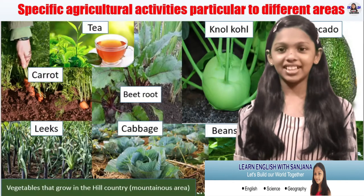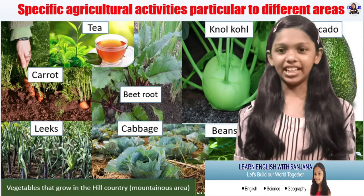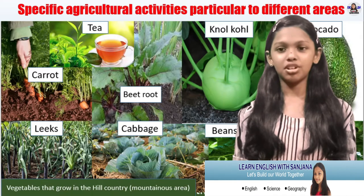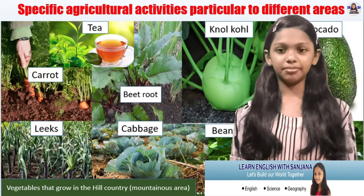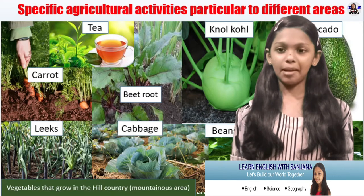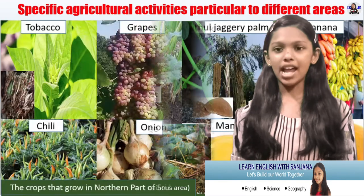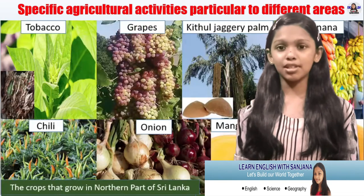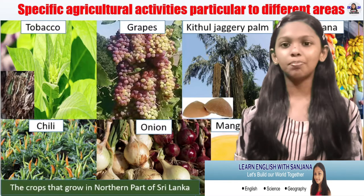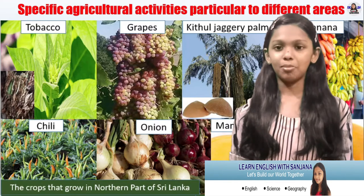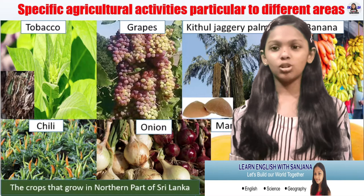Now let's look at some vegetables and crops that grow in the hilly country: carrot, tea, knol-khol, avocado, beetroot, leeks, cabbage, and beans. Now I am going to reveal the names of some crops that grow in another part of Sri Lanka: tobacco, grapes, kitul jaggery, and palm.